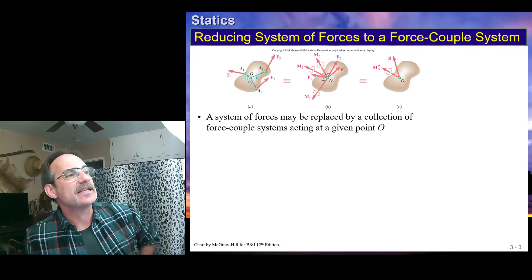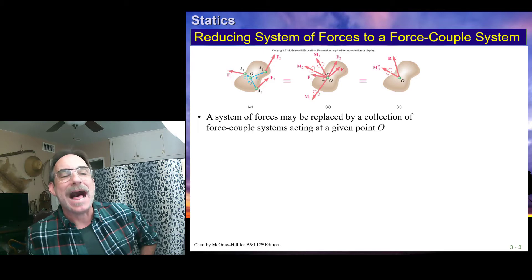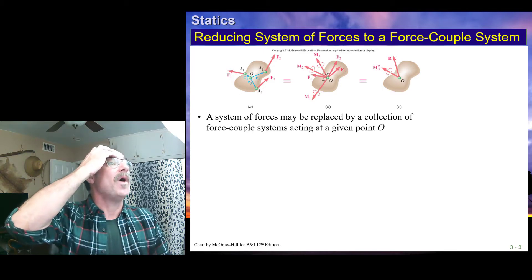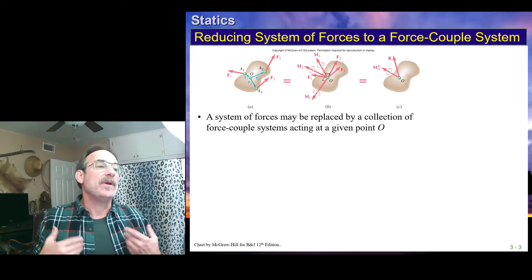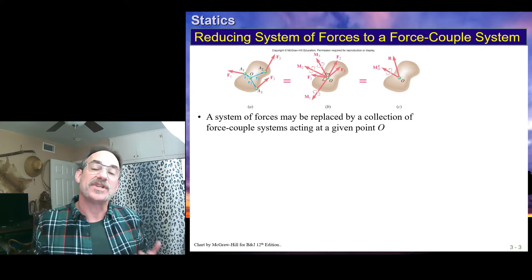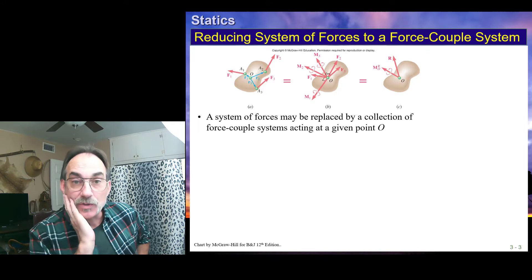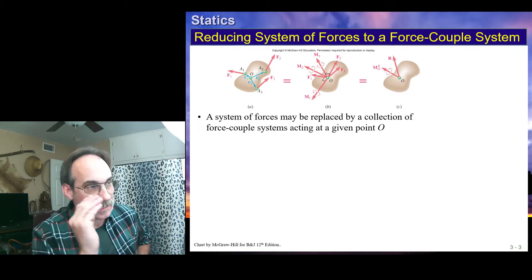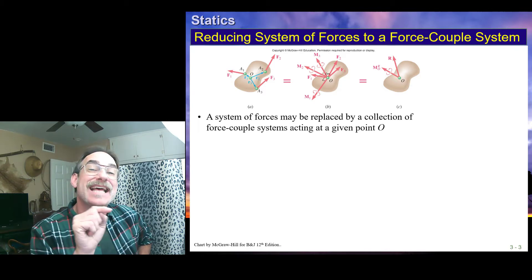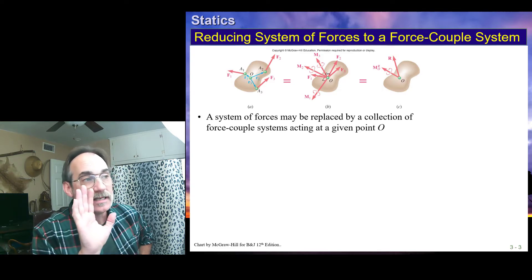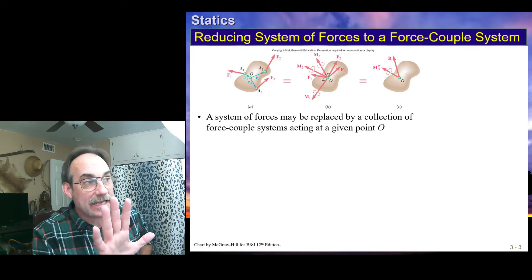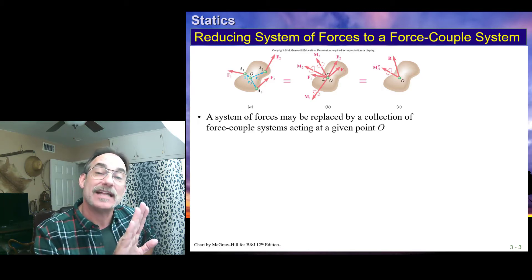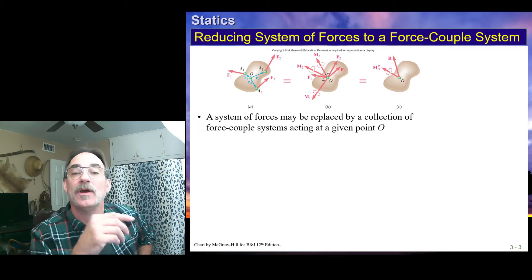Looking at figure A — we have a blob, some kind of rigid body, with three forces applied to it: F1, F2, and F3. If we want to replace these with an equivalent force system about point O, we calculate the summation of effects on point O. We sum all forces and place them at point O, then sum all moments about point O. Since we're summing all forces on the rigid body, we can place those at O, and since we summed all moments about point O, we place that at O — and that's an equivalent force system.